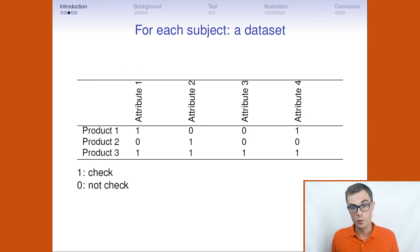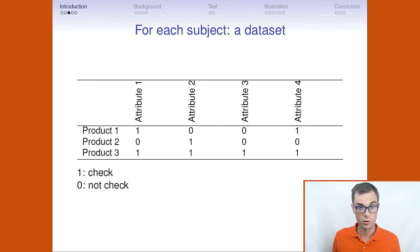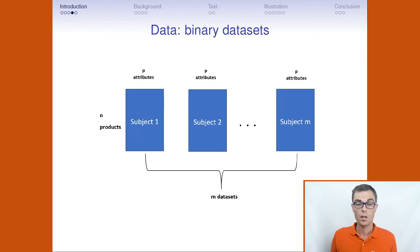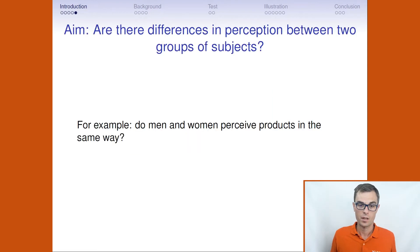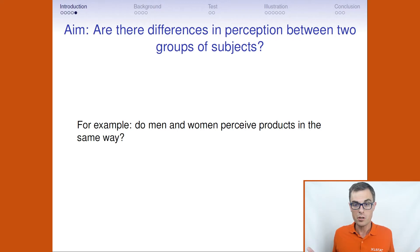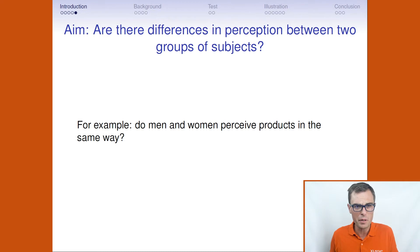For each subject, we have a dataset with rows as products and columns as attributes, where one means the subject checked the corresponding attribute and zero if not. All in all, we have one binary dataset per subject on the same products and the same attributes. The aim is to answer the following question: are there differences in perception between two groups of subjects? This question is very often asked — for example, do men and women perceive the products in the same way or not?